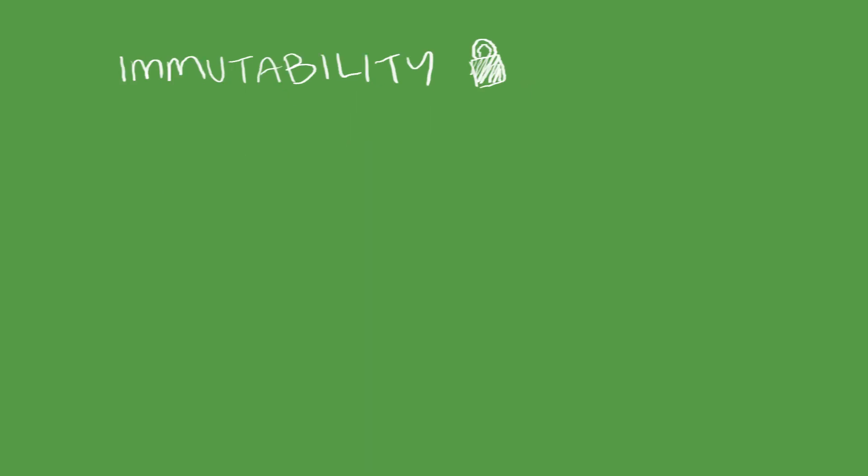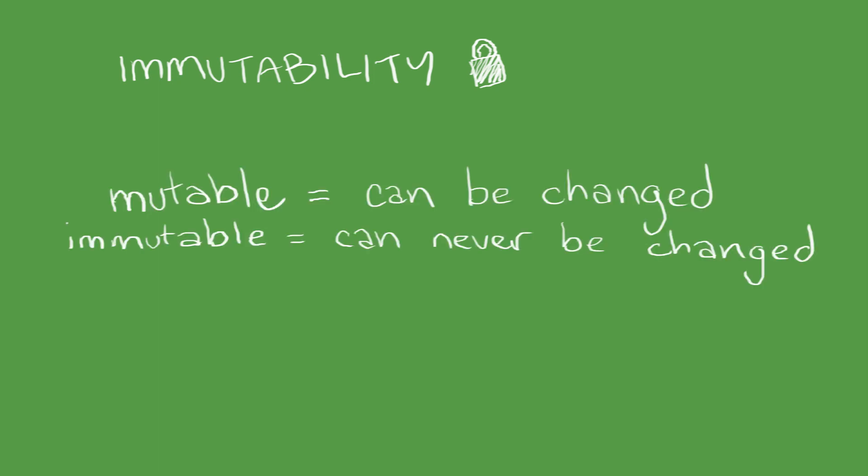I should definitely at some point do a longer episode about mutability. A variable that is immutable can never be changed, whereas a variable that is mutable can be changed. And the difference between these two types of variables have many wide-ranging effects on systems that you design.